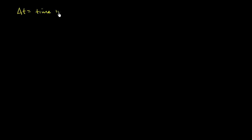Let's say that the ball is in the air for delta t — delta t is equal to the total time in the air. Then we know that the time up is going to be half of that, which is the same as the time down. So the time up is going to be equal to delta t divided by 2.